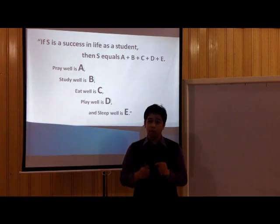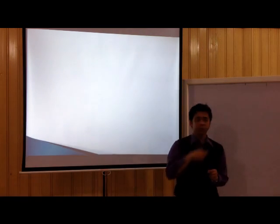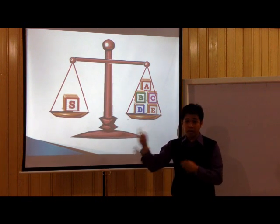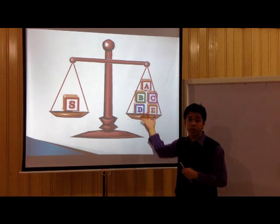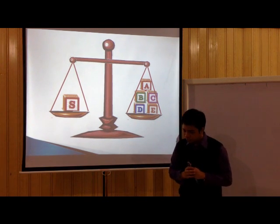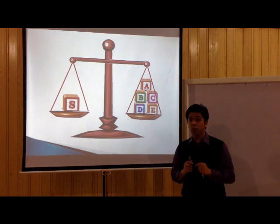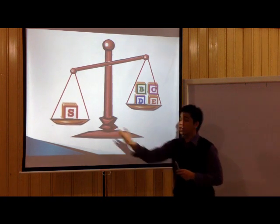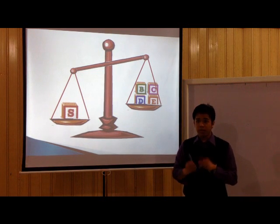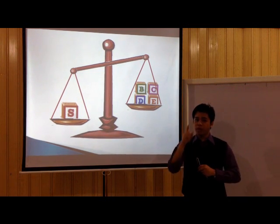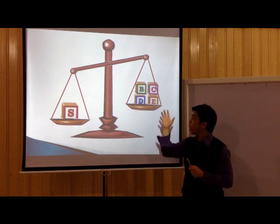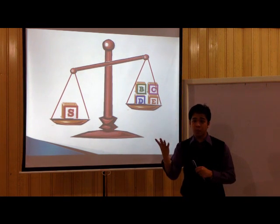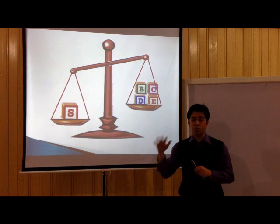Now, let's try to put it in a more practical way. Let's use a scale. In this scale, your S can be found on the left side, and all the things that you have to do to become successful can be found on the right side. Now, what happens if you fail to do one thing? If you fail to do one thing, your success rate will fall down. That means, if you want to be successful in life as a student, you have to pray well, study well, eat well, play well, and sleep well. You have to do all these things so that you can become successful.